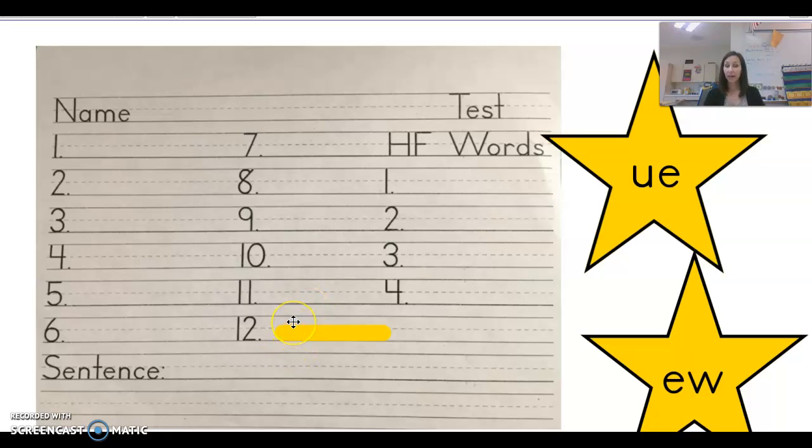Okay, I'm going to go ahead and read seven through twelve quickly. Number seven is few. Number eight is chew. Number nine is crew. Number ten is drew. Number eleven, stew. And number twelve, threw. As in I threw the ball.